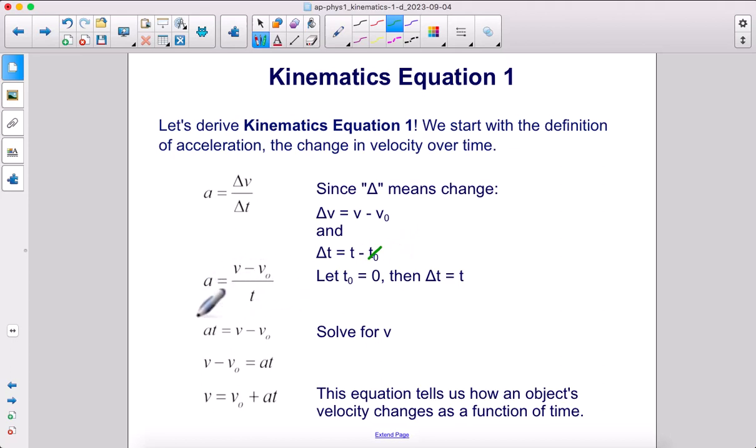Now, all we do is rearrange this equation to solve for V. We multiply both sides by T and add V-naught to both sides, and we get kinematics equation one. This equation tells us how an object's velocity changes as a function of time.